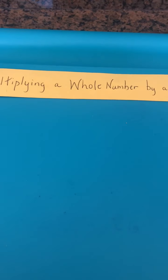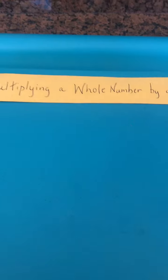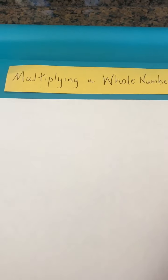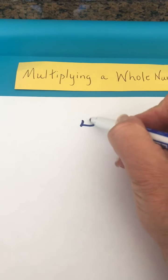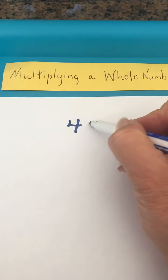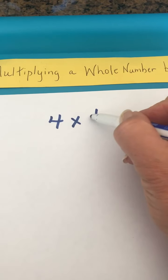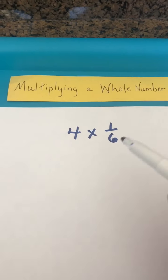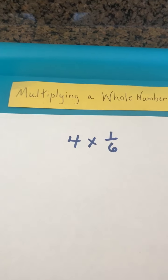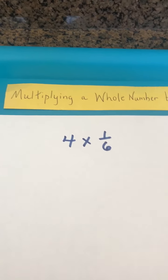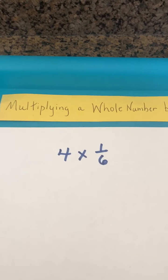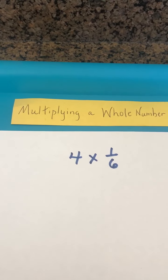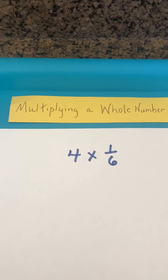Let's look at another example of multiplying a whole number by a fraction using drawings. We have four groups of one-sixth. Once again, if we think back to what multiplication really is and recall that it's just like equal groups and repeated addition.